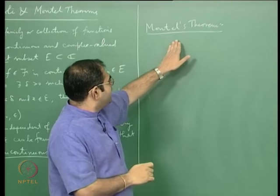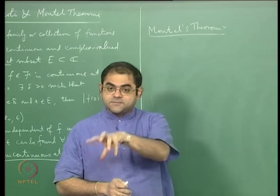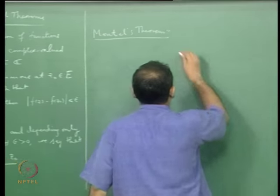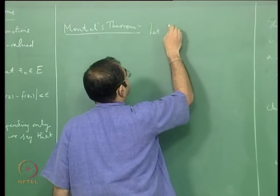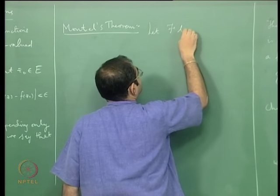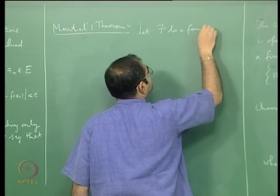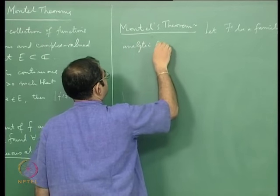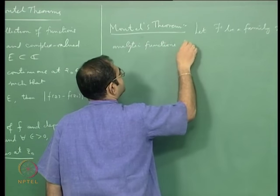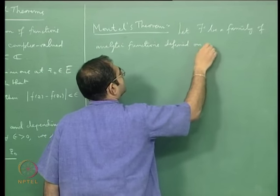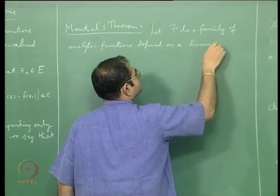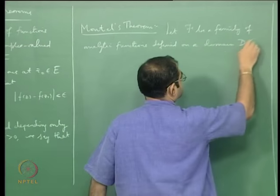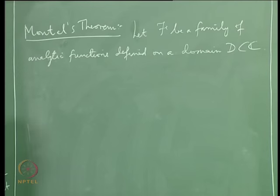So what you have to do is put all the requirements only on compact subsets. Let script-F be a family of analytic functions defined on a domain D inside the complex plane. D is an open connected set and all the functions in the family script-F are defined on this domain and they are analytic functions.